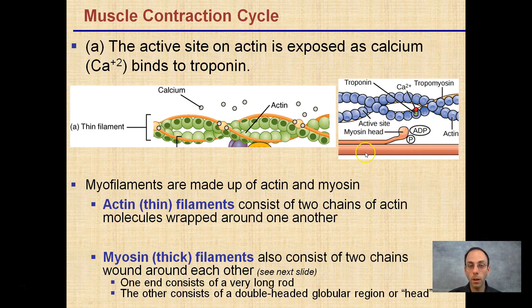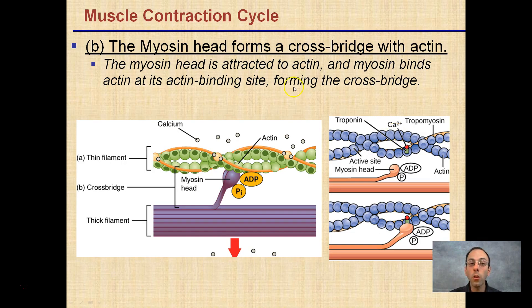Myosin are the thick filaments — the red or purple in the image. They also consist of two chains wound around one another. One end consists of a very long rod, while the other consists of a double-headed region called the head region — the myosin head. The myosin head forms a crossbridge with the actin, binding at its actin binding site. This crossbridge formation is all initiated with calcium allowing the binding site to occur.